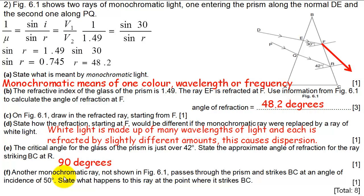Another monochromatic ray, not shown in figure 6.1, passes through the prism and strikes BC at an angle of incidence of 50 degrees. State what happens to this ray at the point where it strikes BC. This is just going to be now the condition of total internal reflection, where all the light gets reflected back and none escapes.